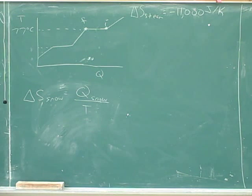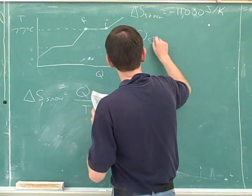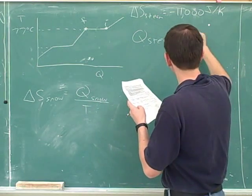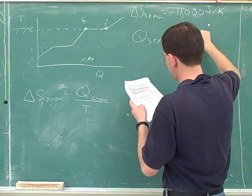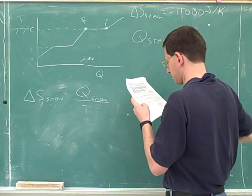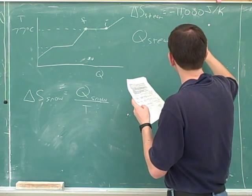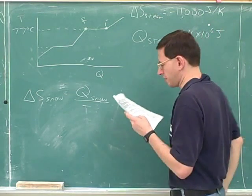Because it's just the opposite value? That's right. So what did we figure out earlier? We figured out that Q for the steam was—no, that was a different number. Negative 4 times 10 to the 6. That's right.